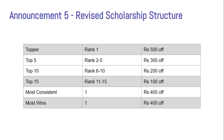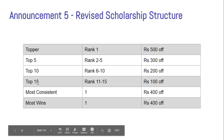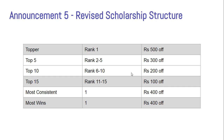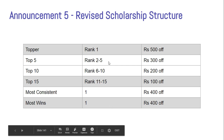The last announcement: I have revised the scholarship structure a bit. Previously the topper was getting 1000 rupees, but now the topper will receive 500 rupees. I have taken that 500 rupees and introduced a new tier: students ranked 11th to 15th will also receive 300 rupees off. That is the only change in the scholarship structure — the topper's amount went from 1000 to 500, and a new reward tier for ranks 11–15 has been added. Everything else remains exactly the same.